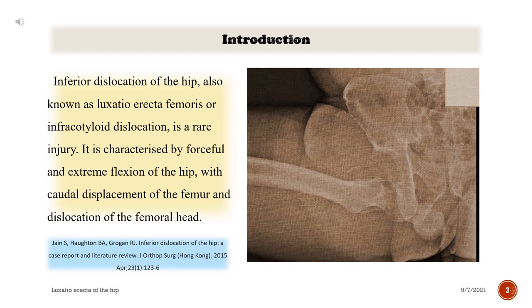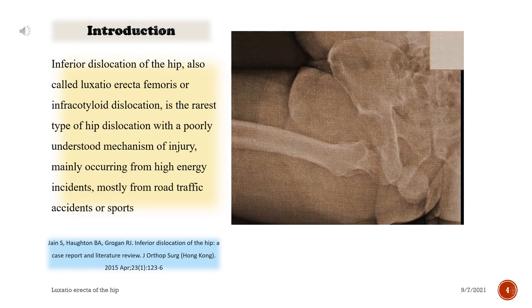Inferior dislocation of the hip, also known as luxatio erecto femoris or infracotiloid dislocation, is a rare injury. It is the rarest type of hip dislocation with a poorly understood mechanism of injury, occurring from high energy incidents, mostly from road traffic accidents or sports.